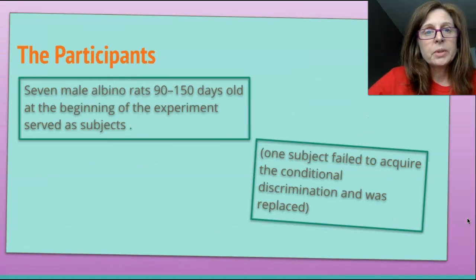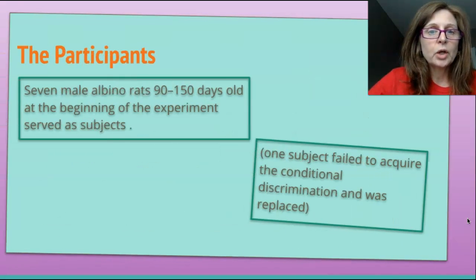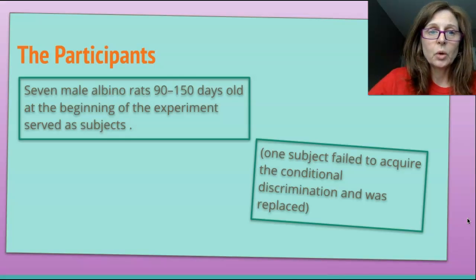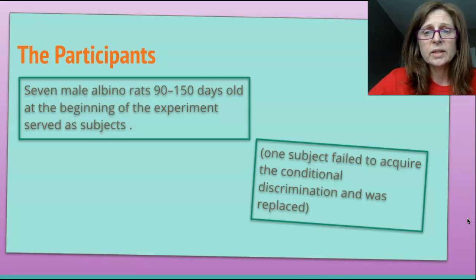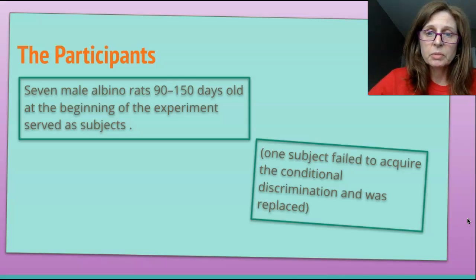The participants in the study were 7 male albino rats that were aged 90 to 150 days old. These were the participants at the beginning of this experiment, and one of the rats failed to acquire the conditional discrimination and was replaced.